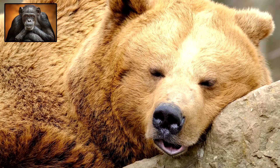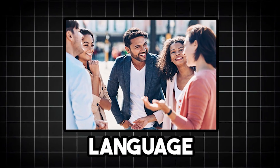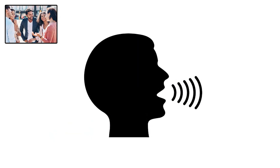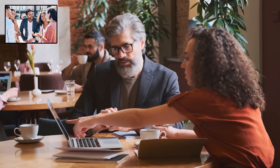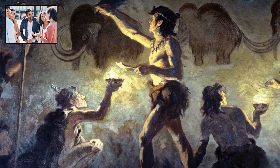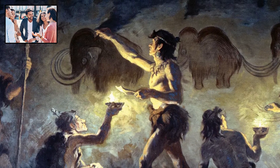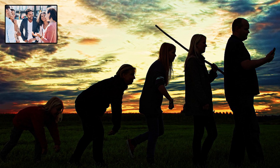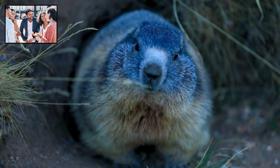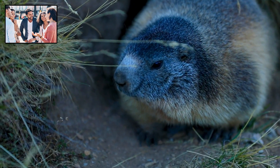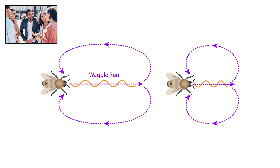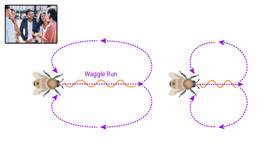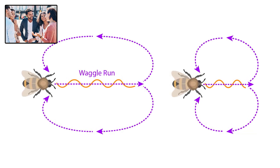Language and communication are evolutionary traits that allow organisms to share information using sound, gestures, scent, body language, and in humans, complex spoken and written language. In its earliest forms, communication likely began with simple signals — a sudden noise might have warned of danger, or a visual display could have helped attract a mate. Today, animals use a wide variety of methods to communicate. Prairie dogs can warn others about predators with chirps that even convey details like size and speed. Vervet monkeys use distinct alarm calls depending on whether the threat is a leopard, eagle, or snake. Bees showcase impressive nonverbal communication through a waggle dance, telling the hive exactly where to find nectar, indicating both direction and distance.